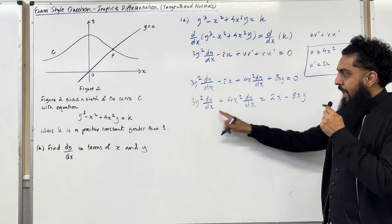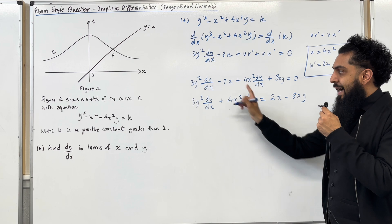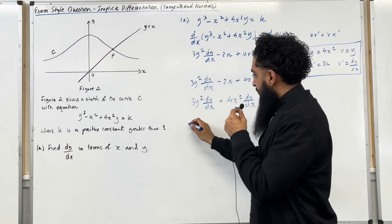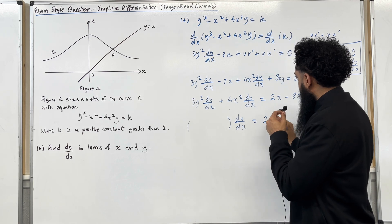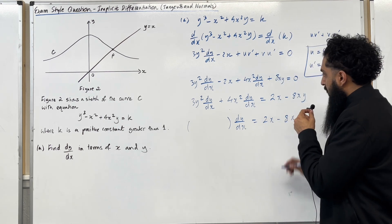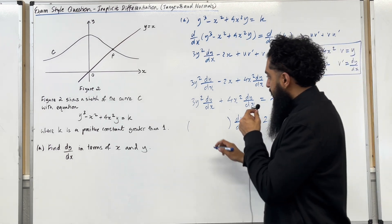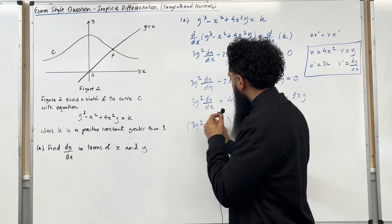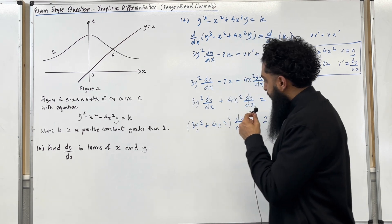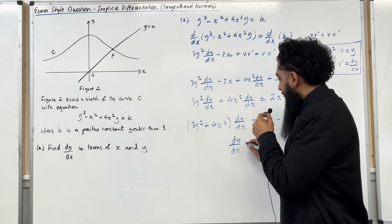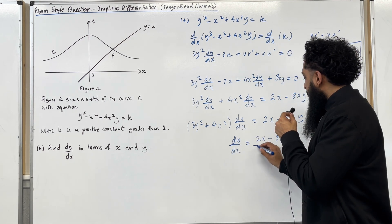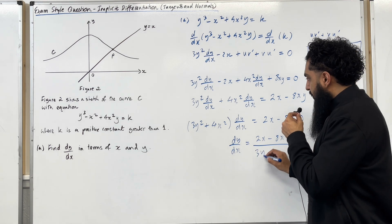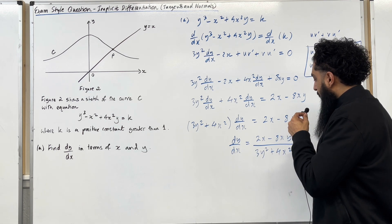I can take out a common factor of dy over dx. I can factorize the left hand side. So inside the bracket I've got 3y squared plus 4x squared. So my dy over dx is equal to 2x minus 8xy all over 3y squared plus 4x squared.